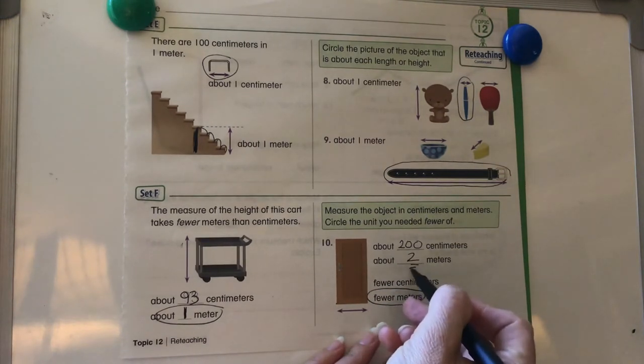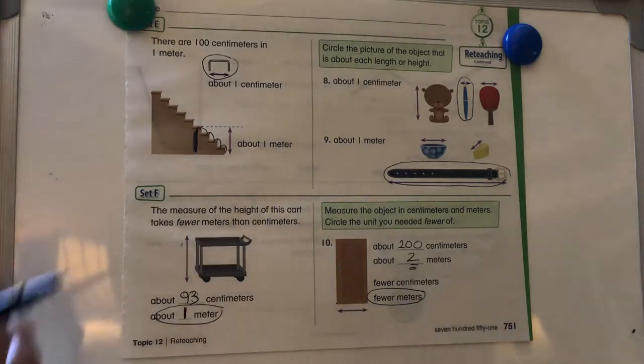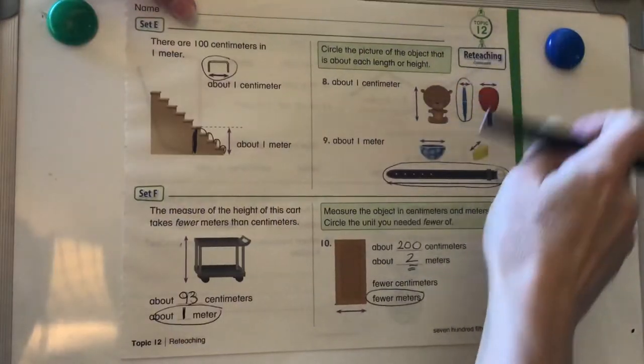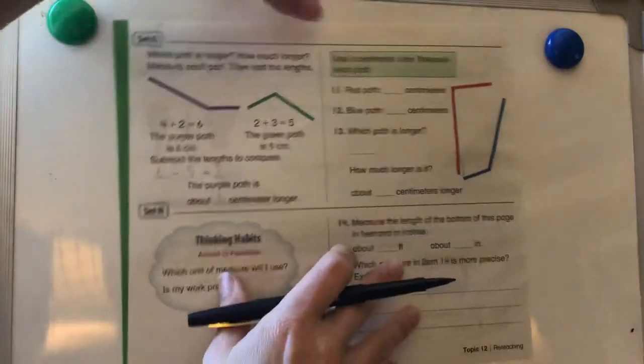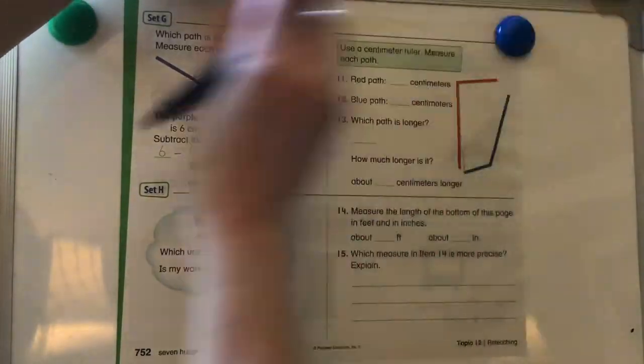What's the smaller number or fewer number? It's two. So we needed fewer meters. So again, you can take the time and go around and measure these items around your house if you would like to.